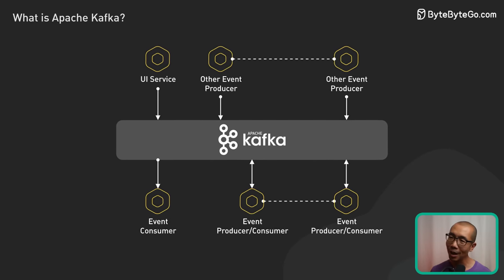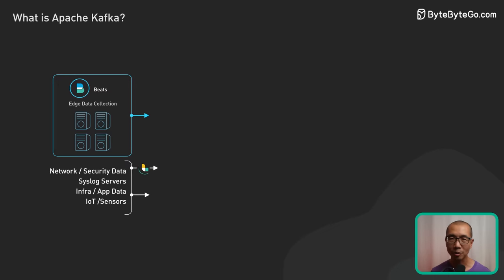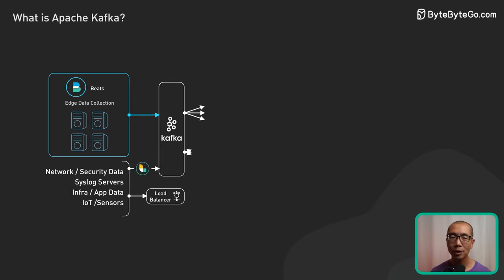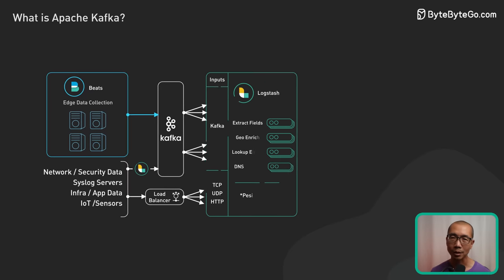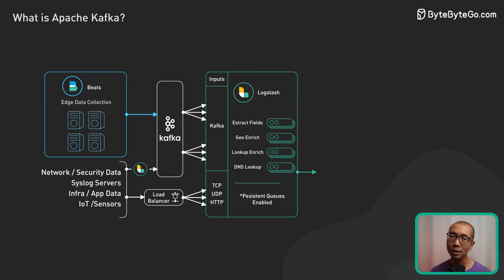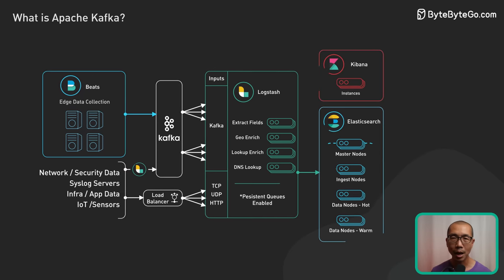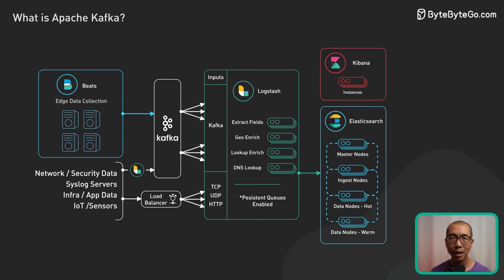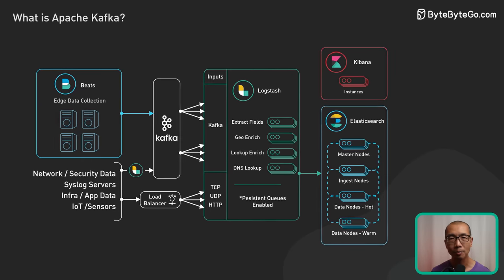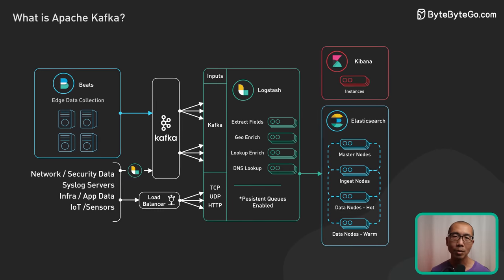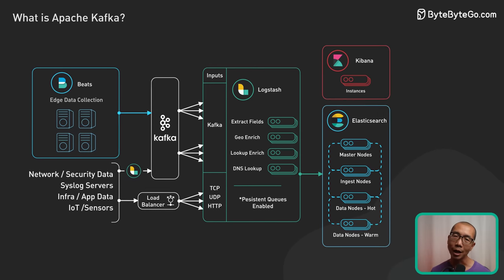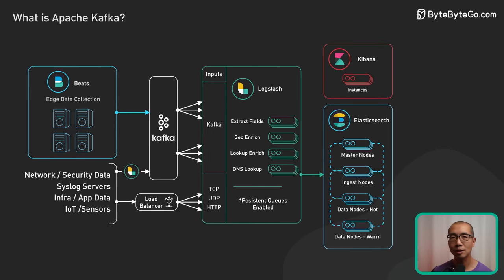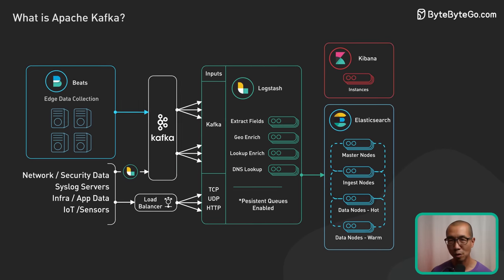Kafka is also great for monitoring and observability when integrated with the ELK stack. It collects metrics, application logs, and network data in real-time, which can then be aggregated and analyzed to monitor overall system health and performance.